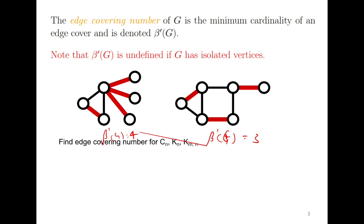Now quickly try to compute the edge covering number of the cycle graph, complete graph, and complete bipartite graph. Starting with the cycle graph: for C4, only two edges are sufficient to cover the four vertices. But for C5, if you pick two edges, then it has at most four endpoints, and therefore all the vertices cannot be covered. So instead of two, you require three.